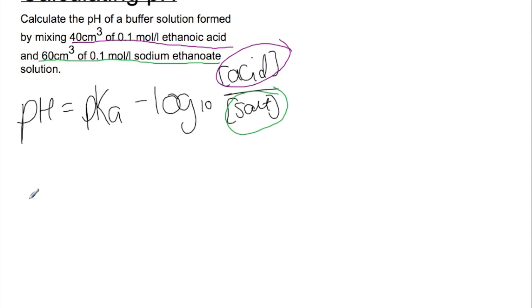If you have a look in the data book you can get the value for the pKa which is 4.76 for ethanoic acid. We then need to go about calculating the concentration of acid and the concentration of the salt. So the total volume that we have when we add these two together is 100. This will affect the concentration of both of them.